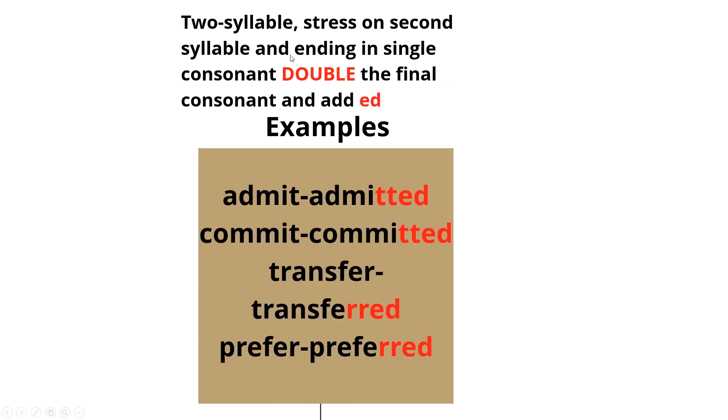Two syllable, stress on second syllable, and ending in single consonant, we double the final consonant and add ED. When the word has two syllables, we stress on the second syllable, and it ends with a single consonant, we double the final consonant and add ED. For example, admit, admitted. We have doubled our final consonant, which is T. Commit, committed. Transfer, transferred. Prefer, preferred.